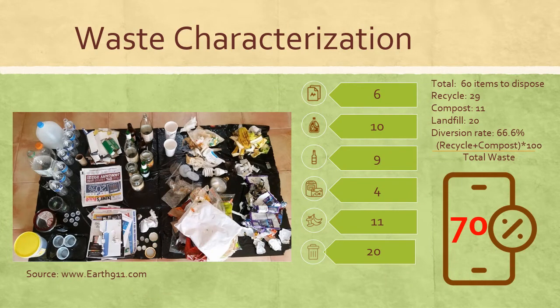This is an example of a waste audit — waste was collected and sorted into different categories. After recording your results, you can calculate your diversion rate with the following formula: the amount of recyclable waste plus compost waste, times 100, divided by the total waste. The City of Calgary has set specific diversion targets for each sector. For a single family, 70% is the expected diversion rate. If you use a scale, you can use the weight to calculate your diversion rate.